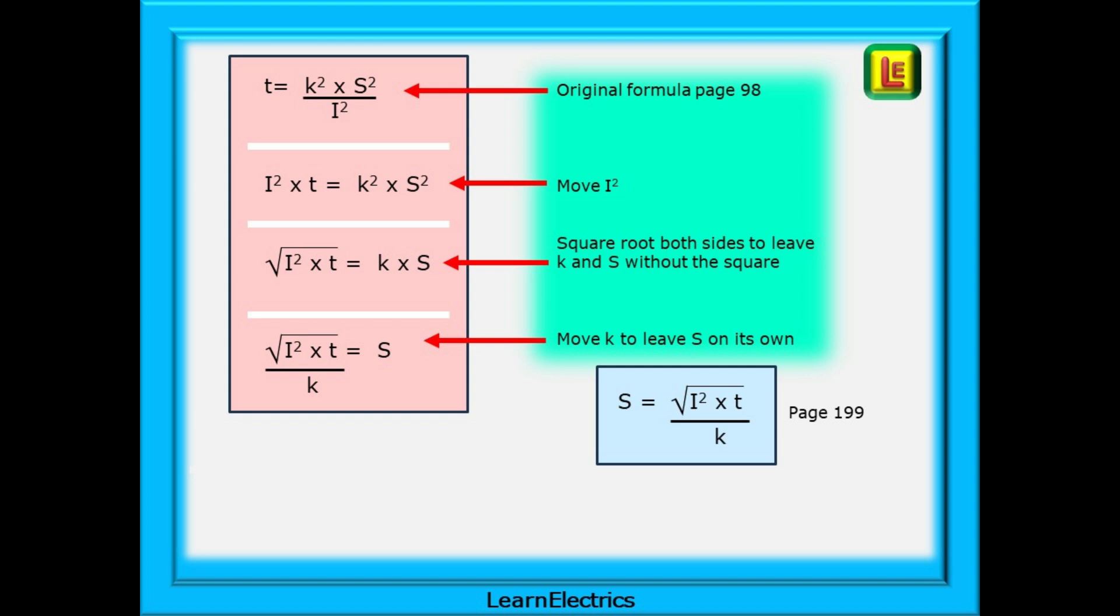We can begin with the formula on page 98. T for time equals K squared times S squared divided by I squared. The first thing to do is to move the I squared to the opposite side. It's on the bottom so it must go on the top. Next step we're trying to get S on its own and at the moment it is S squared. If we square root both sides we will remove the squares from the K and the S. Now we have the square root of I squared times T equals K times S. Move the K to the bottom on the opposite side to leave S on its own. S is the square root of I squared times T over K the same as page 199 but without using the book.